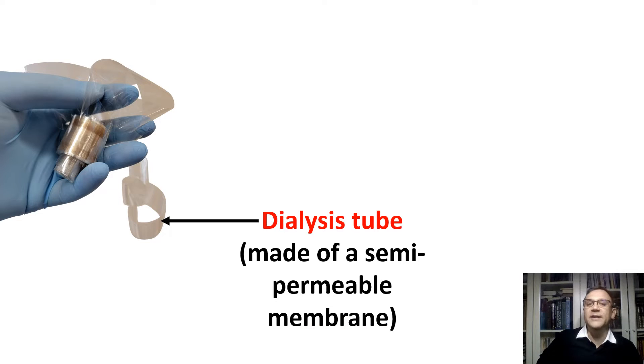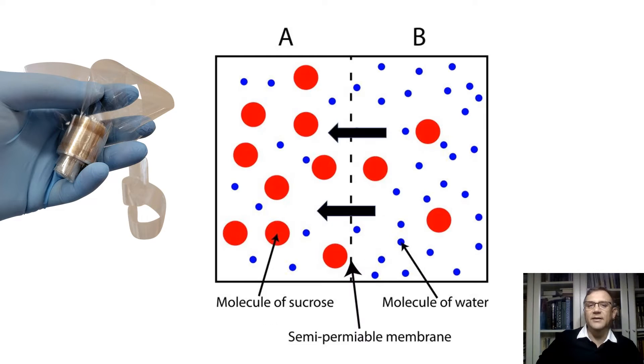Now we have to make dialysis bags. To make dialysis bags, we need dialysis tube. The dialysis tube is typically made from semi-permeable membrane, often composed of cellulose or similar polymer. This material allows molecules like water, ions, and small solutes to pass through while blocking larger molecules such as proteins, polymers, or in our case, sucrose molecules.